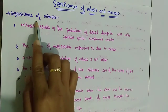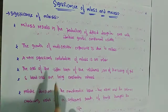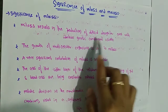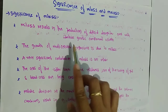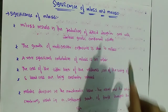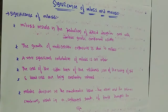First, the significance of mitosis. Mitosis results in the production of diploid cells with an identical genetic complement. Mitosis produces two diploid cells that are genetically identical to the parent cell.